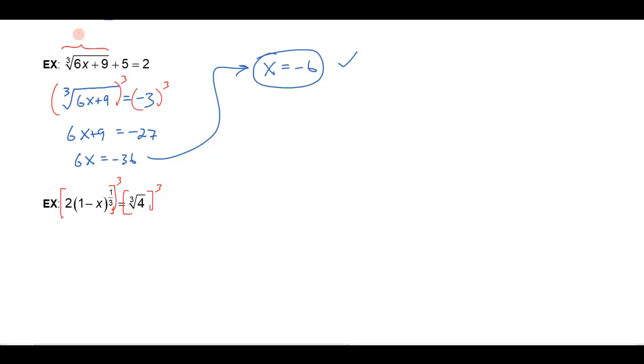So this is going to give me 2 cubed. Don't forget to cube the 2, because I have to cube the whole thing, and then I'll cube the cube root of the 1 minus x. That'll just leave me 1 minus x. And over here, when I cube the cube root of 4, I'll just get 4. So I get 8 times 1 minus x is equal to 4. So 8 minus 8x is equal to 4.